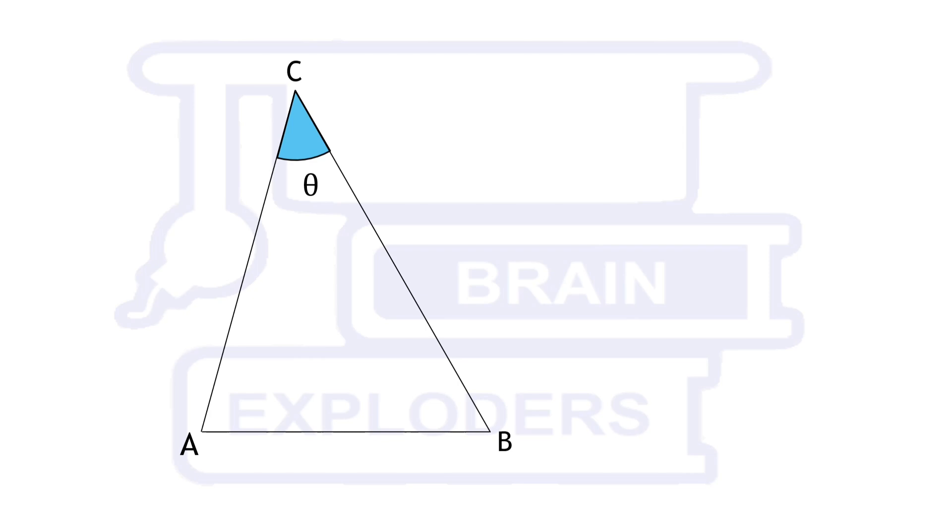We will use mainly two important properties in our question. Here is the first one. If two sides of a triangle are given x and y and angle between them is theta, then area of triangle is equal to half xy sin theta.